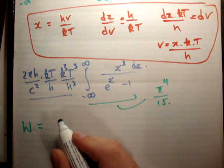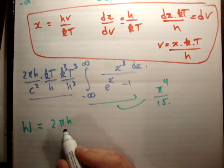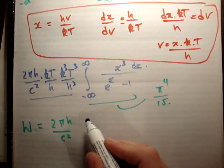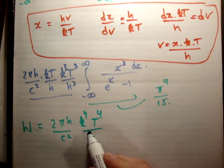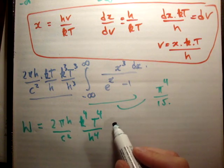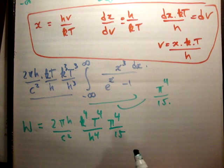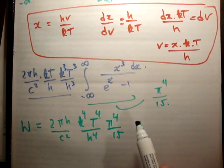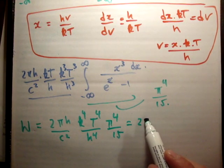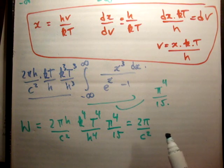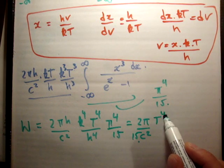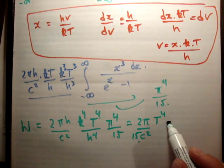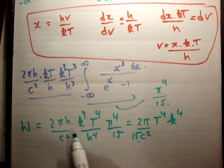As a result, the total power is equal to 2π times h over c squared times k to the fourth T to the fourth over h to the fourth, times π to the fourth over 15.